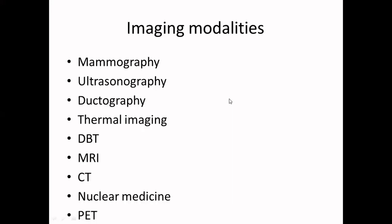Different imaging modalities available for the breast include mammography and ultrasonography, which we most often use. Ductography — injecting iodinated contrast into the ducts — is used in suspected ductal papilloma, especially when a patient presents with bloody nipple discharge, but it is invasive and not routinely done. Thermal imaging came up but has not been sensitive enough to pick up malignancies. The newest addition is DBT — digital breast tomosynthesis, also called the CT scan of the breast.